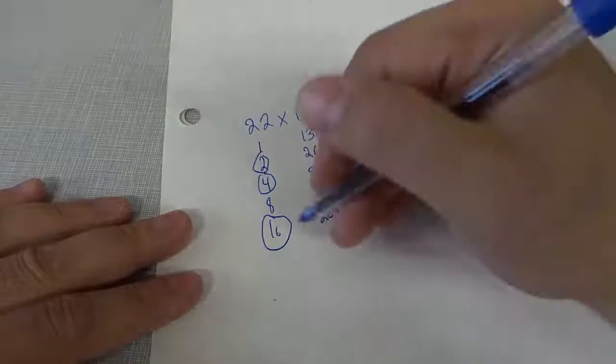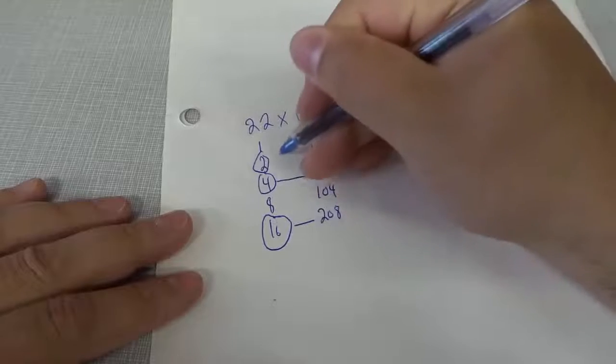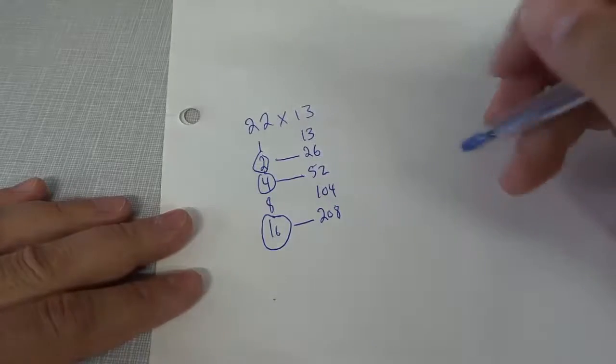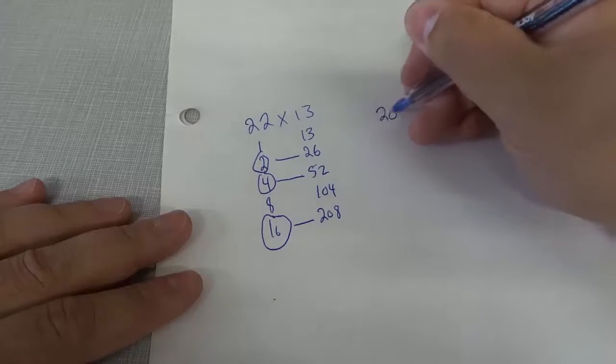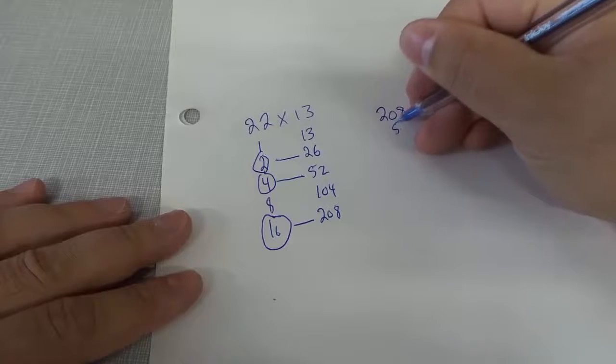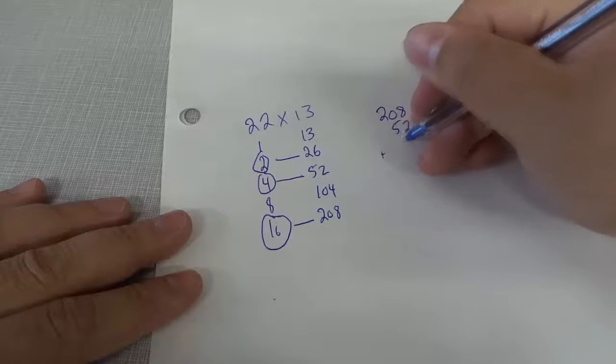So if we take the 16 and we take the four and we take the two. So I chose three numbers, 16, four, and two. I'm going to take the corresponding numbers in the right-hand row like that. So what we have here is 208 plus 52 plus 26.